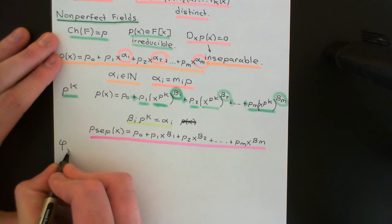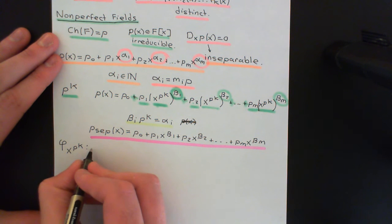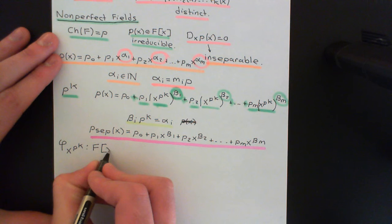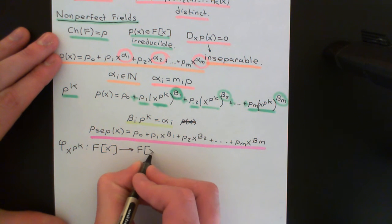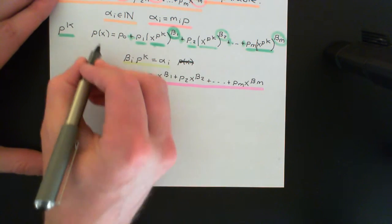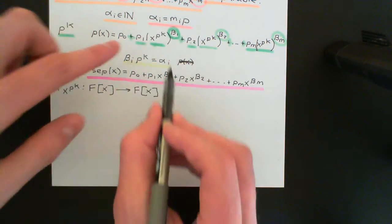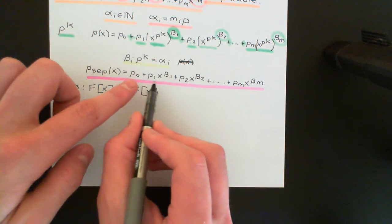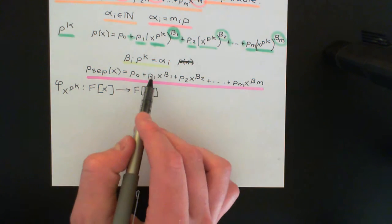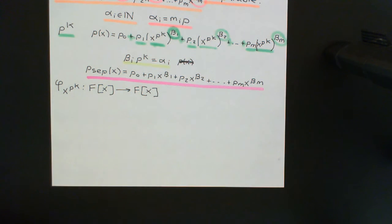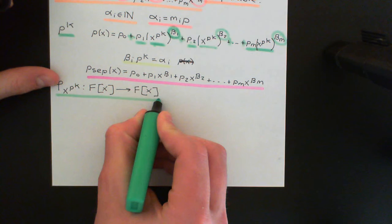You can imagine creating the evaluation homomorphism where you evaluate all polynomials at the monomial x^(p^k). This would be a ring endomorphism from the ring of polynomials over the non-perfect field F into itself, and it maps p_sep onto p(x). This does obey the axioms of a ring homomorphism — indeed a ring endomorphism because the domain and codomain are the same. If you're not familiar with evaluation homomorphisms at polynomials, there is a video on it in the playlist on ring theory.